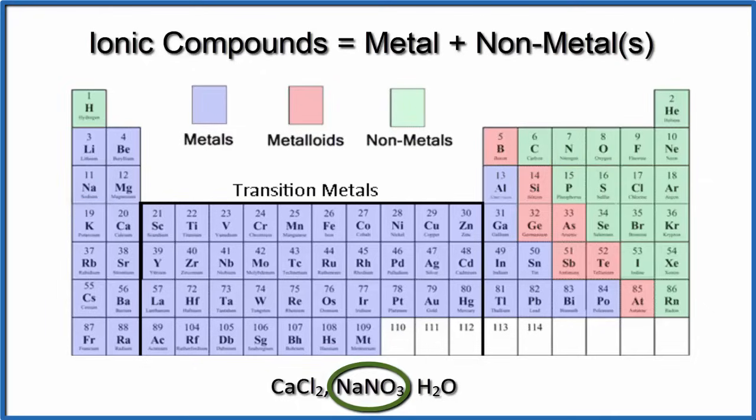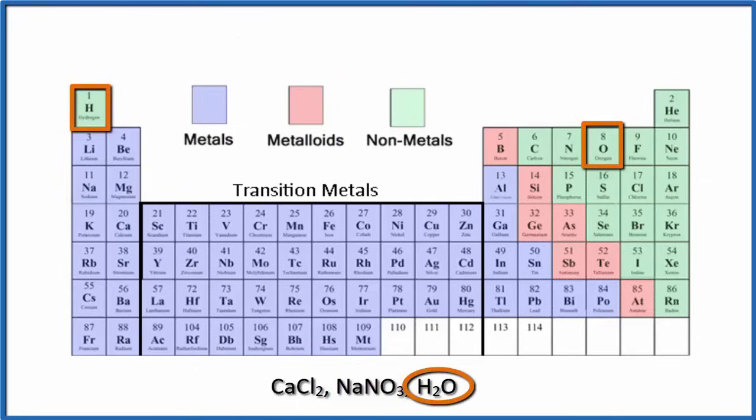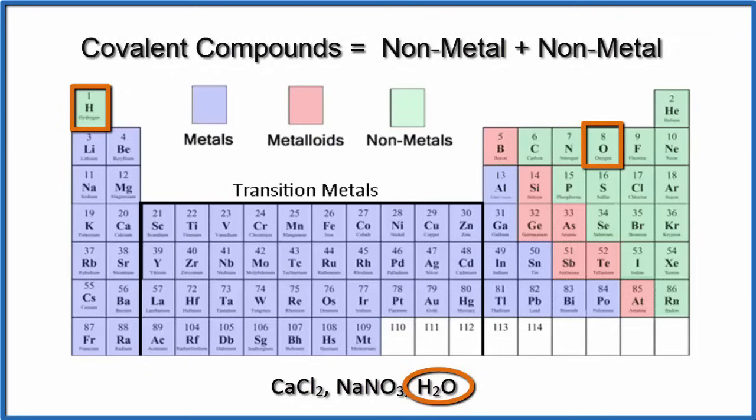Finally, H2O water. Hydrogen is the one we have to watch out for, it's a nonmetal. Oxygen is a nonmetal, so that's not an ionic compound, that's a covalent compound.